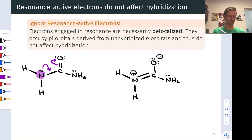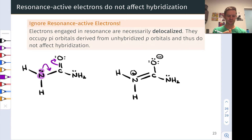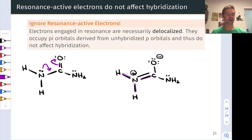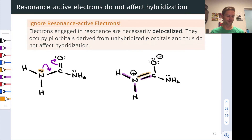Now let's imagine we were asked about the hybridization state of this nitrogen atom. If we looked at the left-hand structure, we might conclude that there's a non-bonding lone pair and three single bonds — that looks like sp3 hybridization. But if we look at the right-hand resonance structure, we have three electron domains and three sigma bonds — this looks like sp2 hybridization. In fact, that pair that looked like a non-bonding lone pair appears to be engaged in a pi bond in the structure on the right.